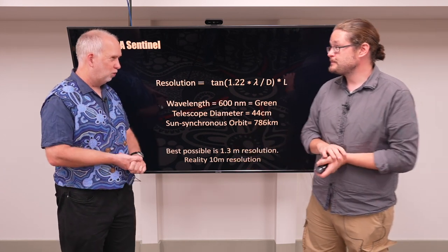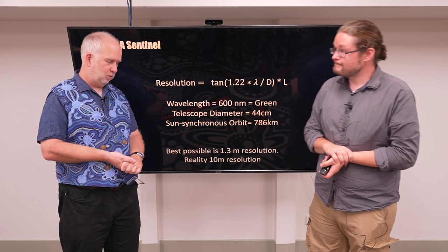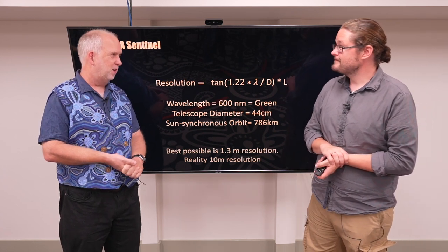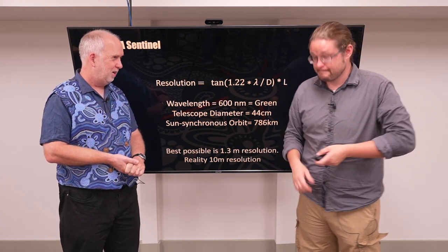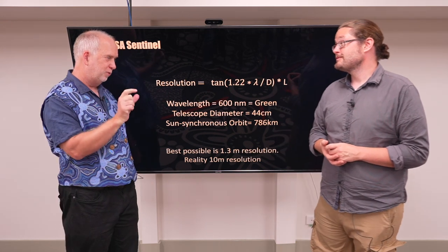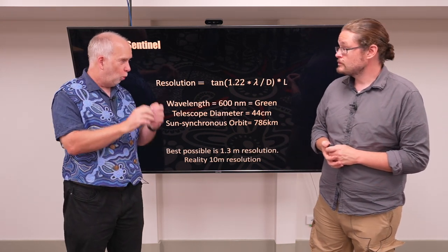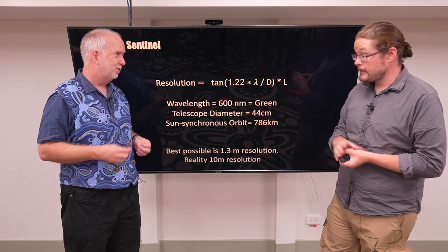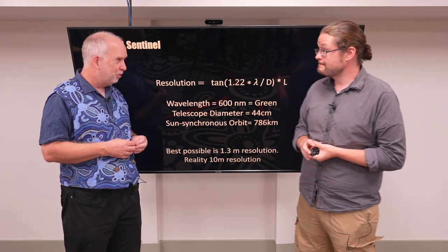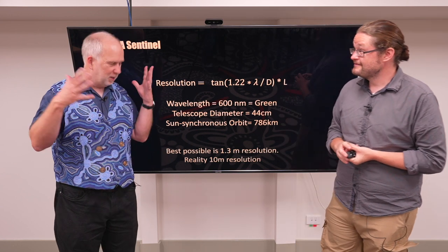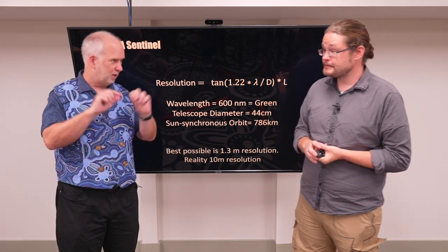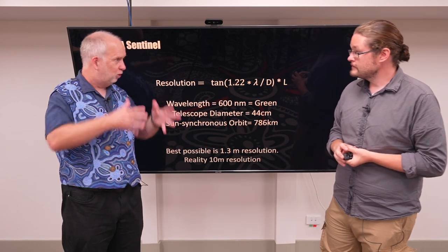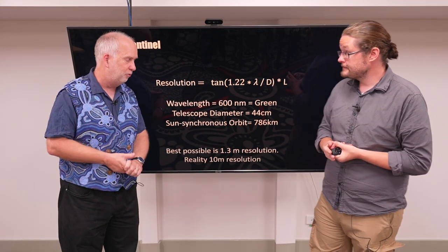So even though 1.3 meters is our theoretical best, practically it ends up being a little bit worse than that. When you're designing one of these spacecraft, there is a trade-off here. Until very recently, you were limited in how many pixels you had in your detector. You could decide to have all those pixels be a really detailed image of a small part, or a less detailed image of a large area. If you want to map the entire Earth, you're limited by the number of pixels. So you might choose to have each pixel be 10 meters rather than 1.3, because that gets you 10 times wider field of view.